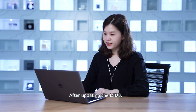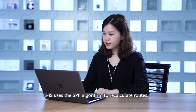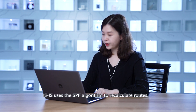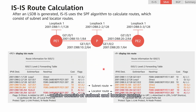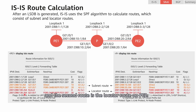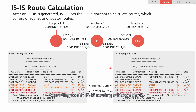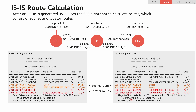After updating the LSDB, IS-IS uses the SPF algorithm to recalculate routes, which consist of subnet and locator routes. We can see that the first route is the locator route on P1 and the second route is the locator route on P2. According to the IS-IS routing table on P, the P has also learned SRV6 routes through IS-IS LSP. Consequently, P can forward the received SRV6 packets through these routes.